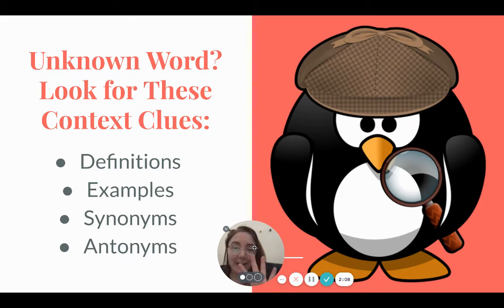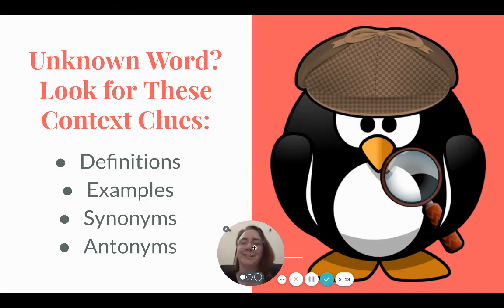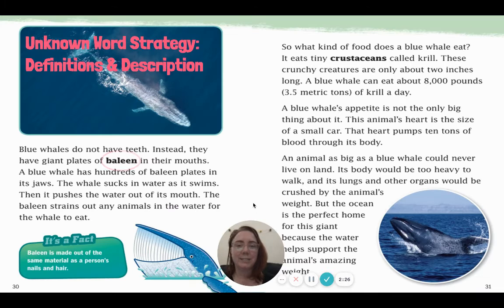There are four main types of clues that writers put into their writing to help a reader figure out unknown words, and we're going to look at all four. They are definitions or description, examples, synonyms, or antonyms — and we'll talk about what those are. So let's look at our first example: definitions and description.